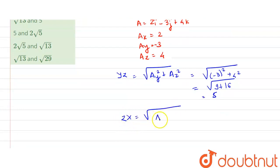it is equal to Az squared plus Ax squared. So this is 4 squared plus 2 squared, that is equal to 16 plus 4, which is equal to 2 root 5.